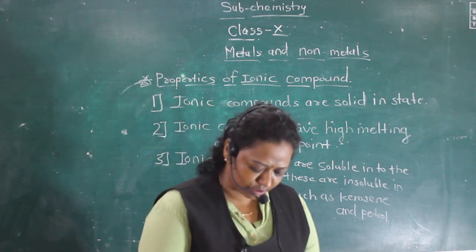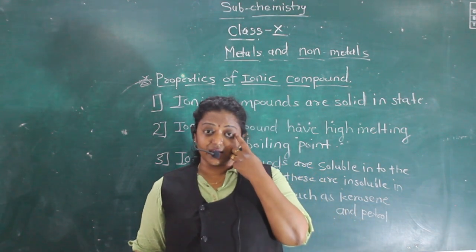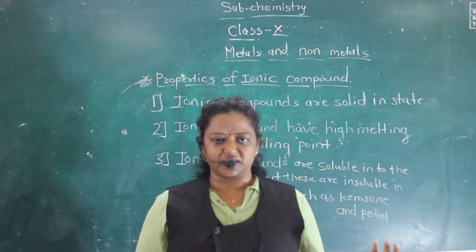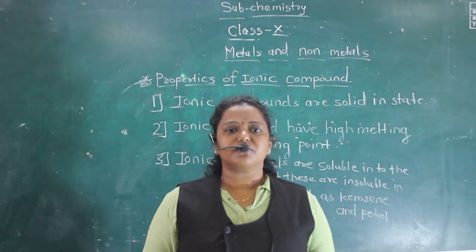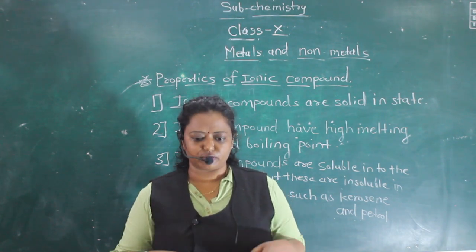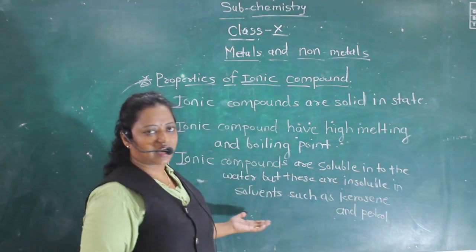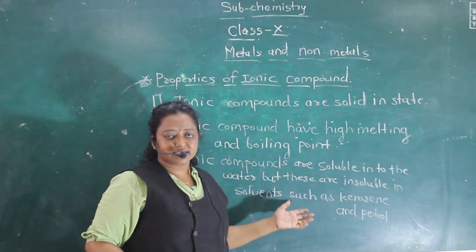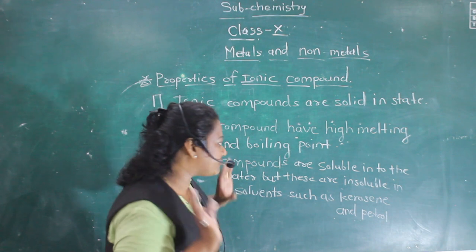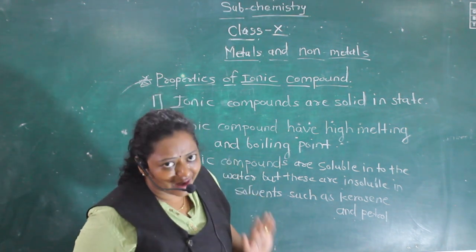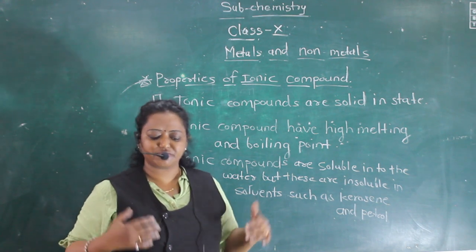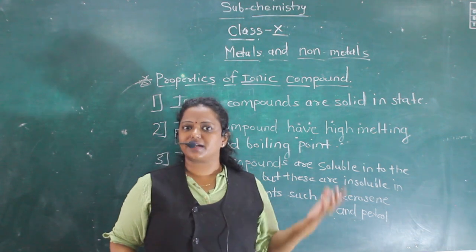The fourth property is about electrical conductivity. There are some salt solutions which can conduct electricity. For conduction of electricity, we require positive and negative ions. Ionic compounds consist of cations and anions, and so ionic compounds are very important for conducting heat and electricity. Through their solution, we can conduct electricity.